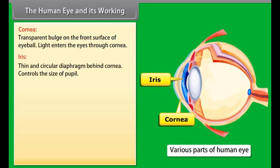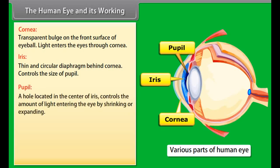Iris is a thin and circular diaphragm behind cornea which controls the size of the pupil. Pupil is a hole in the center of iris that appears black and controls the amount of light entering in the eyes by shrinking or expanding. Retina is a delicate membrane which acts as a screen. The eye lens forms a real and inverted image of the object on retina.